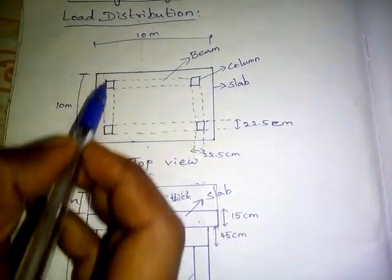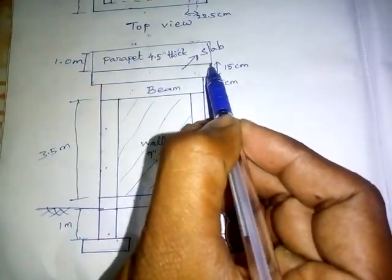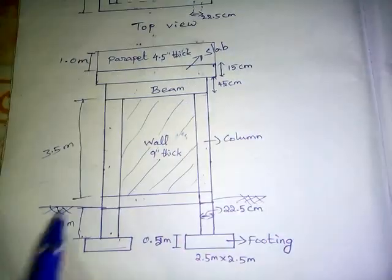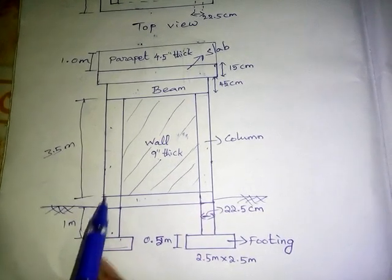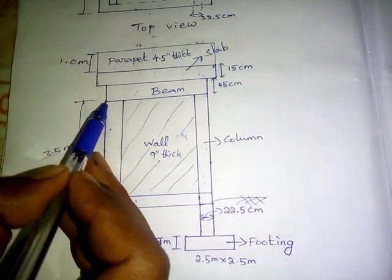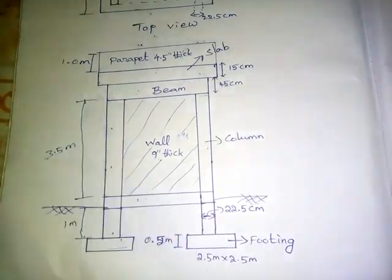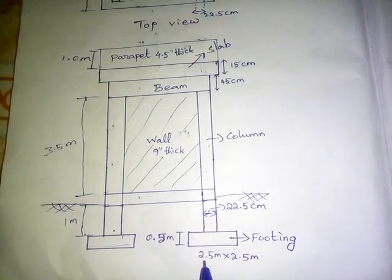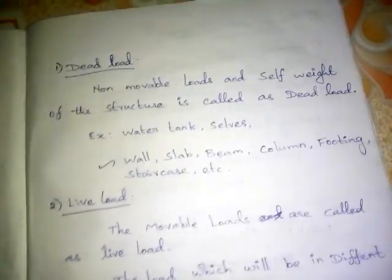This is the beam. This is the slab thickness. The slab thickness is 15 centimeters. The beam thickness is 45 centimeters. The ground level beam thickness is 3.5 meters. The height is 1 meter. The footing thickness is 2.5 meters.